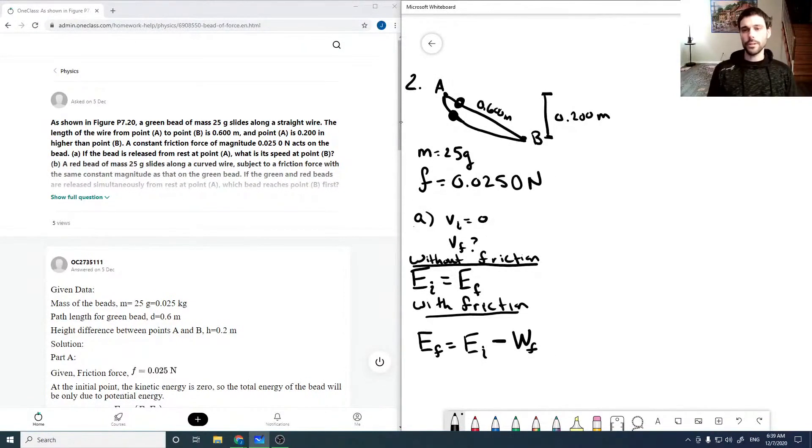And our work due to friction is just going to be our frictional force times our distance, which is 0.0250 times the 0.600 meters, which comes out to be 0.015 joules. Okay, so that's how much we're going to lower our energy.